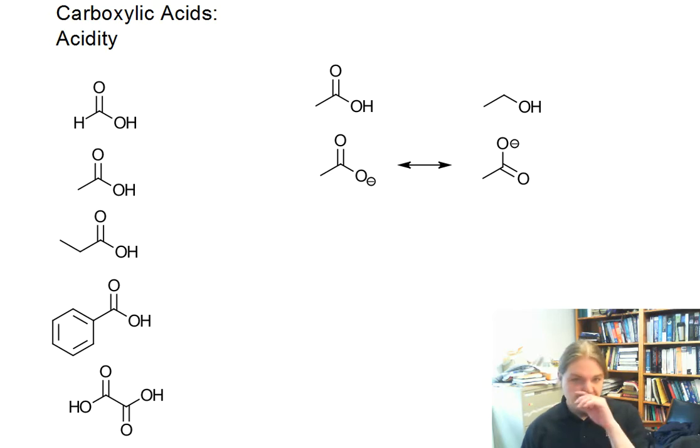And in general, this is going to hold true. And for most simple carboxylic acids, you might expect pKa between 4 and 5 pKa units. And so I'm just going to share with you some pKa's of some carboxylic acids, and we're going to start with formic acid.